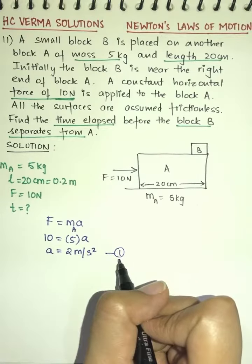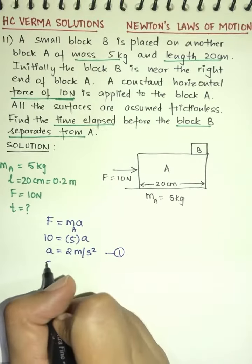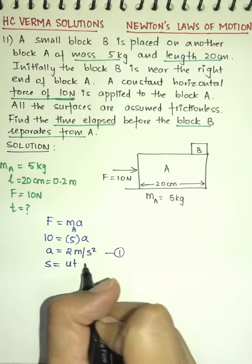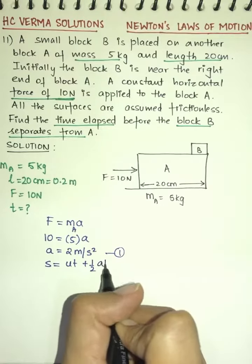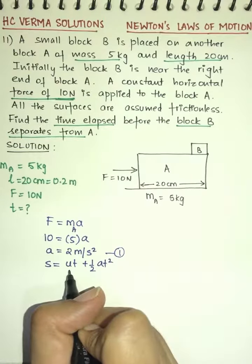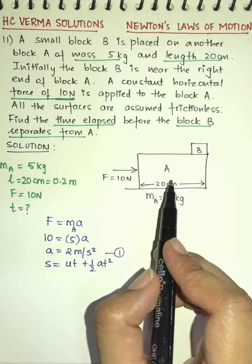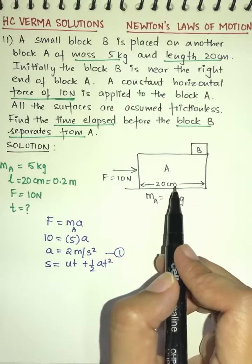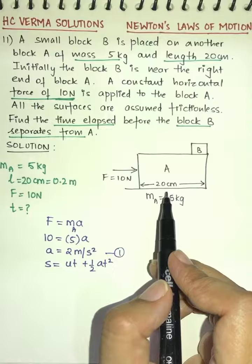Now to calculate the time, we use the equation s = ut + ½at². Here u is the initial velocity of the block. Since the block is initially at rest, u = 0.